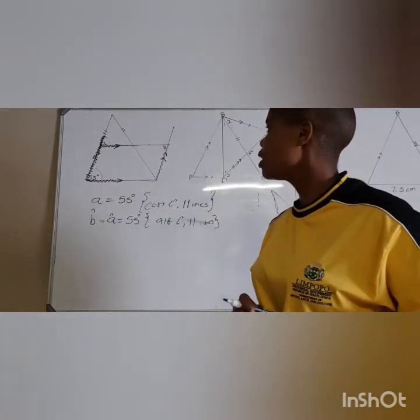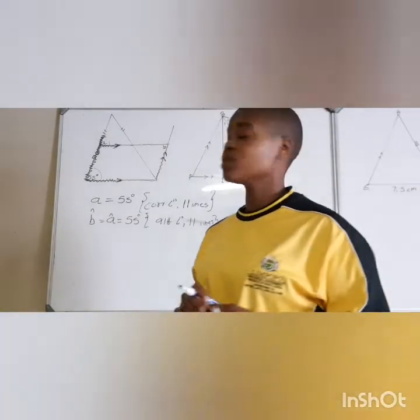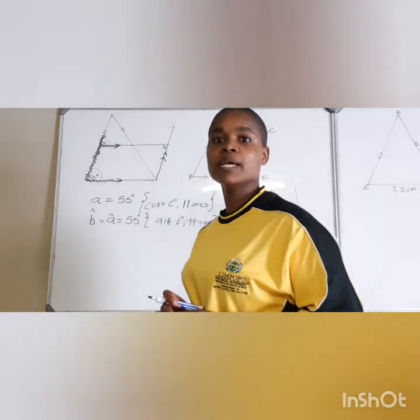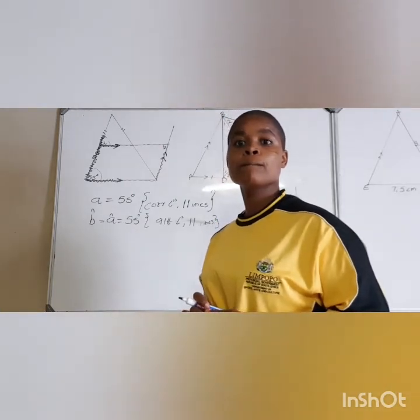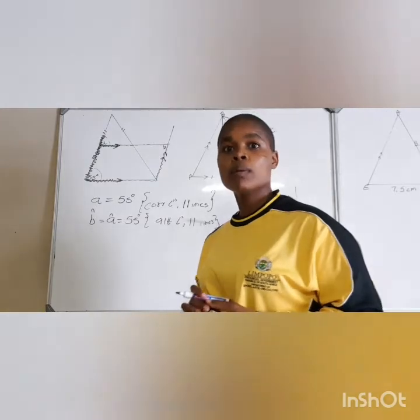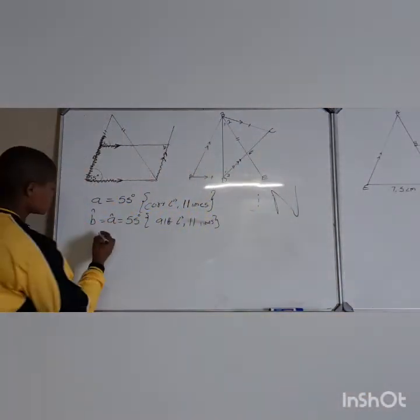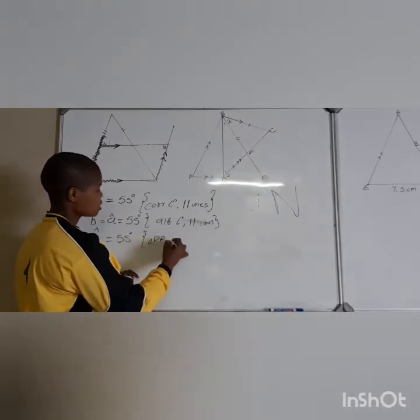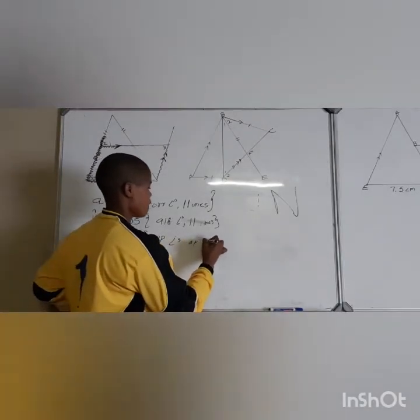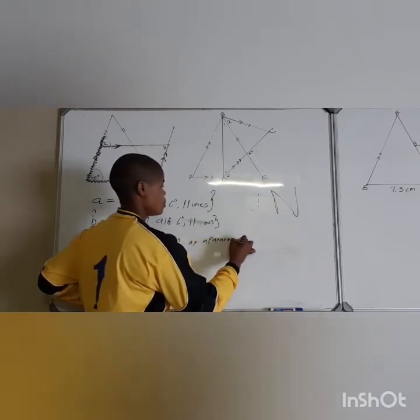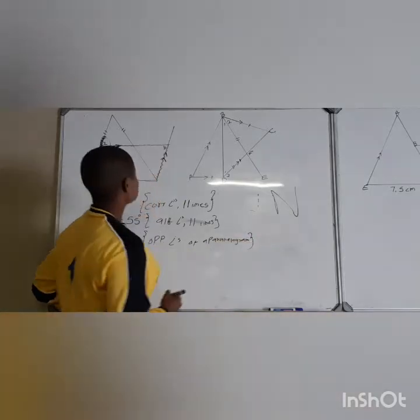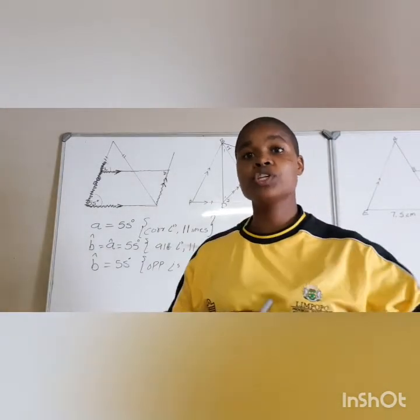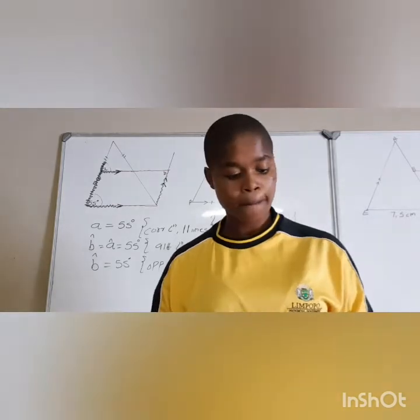And then what will be the letter of B? B is equals to angle A and it's equals to 55 degrees because they are alternate angles. I think someone might have used a different approach because I think I have got a different approach as well. Is there anyone in our group who has got a different approach?